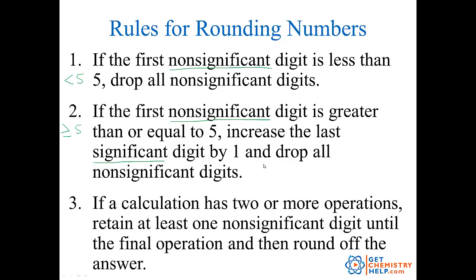The third rule says that if you have a calculation with two or more operations, you want to keep at least one non-significant digit until you get to the final operation and then round off the answer. So you don't want to round off after every operation — you want to wait and round off at the very end.